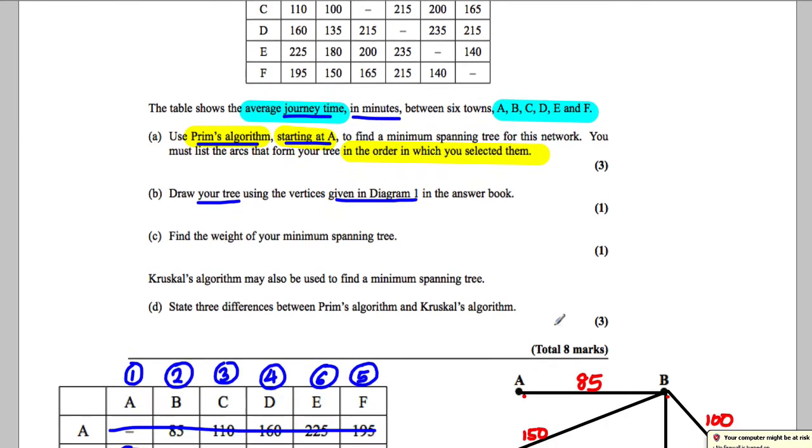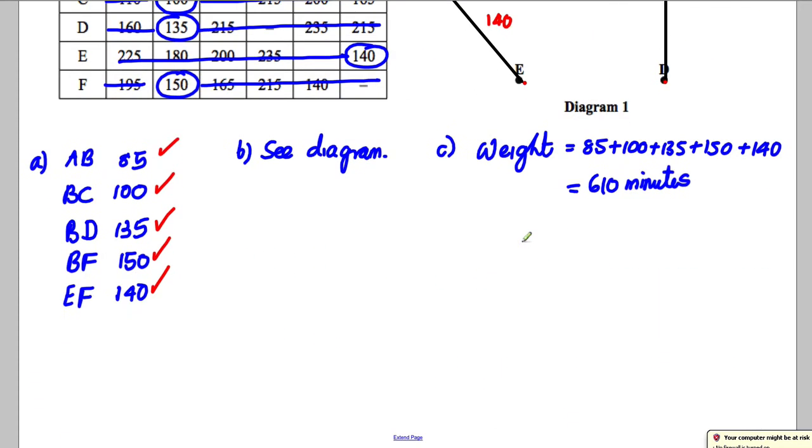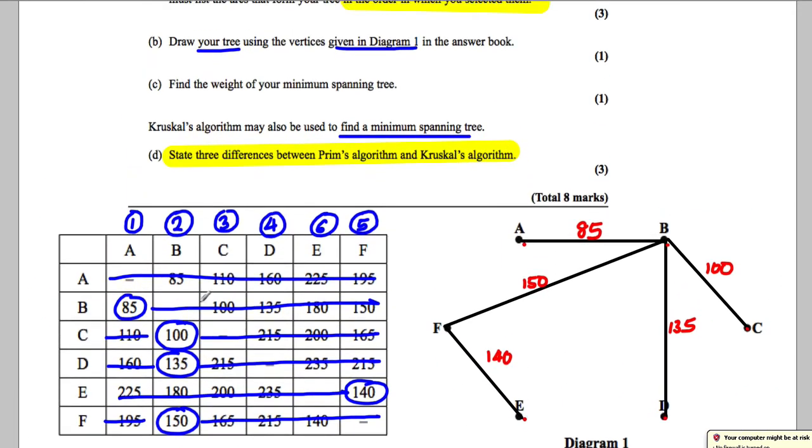Okay, so we're all the way up to here. Then it says Kruskal's algorithm may be used to find a minimum spanning tree. So we're thinking we're using Kruskal's but no. All it says is state three differences between Prims and Kruskal's. So this is quite an unusual question but we need to know the differences between Prims and Kruskal's. So I'm going to show you three of my favorites, the easiest ones to remember. The first one is look at Prims. They gave us a matrix.